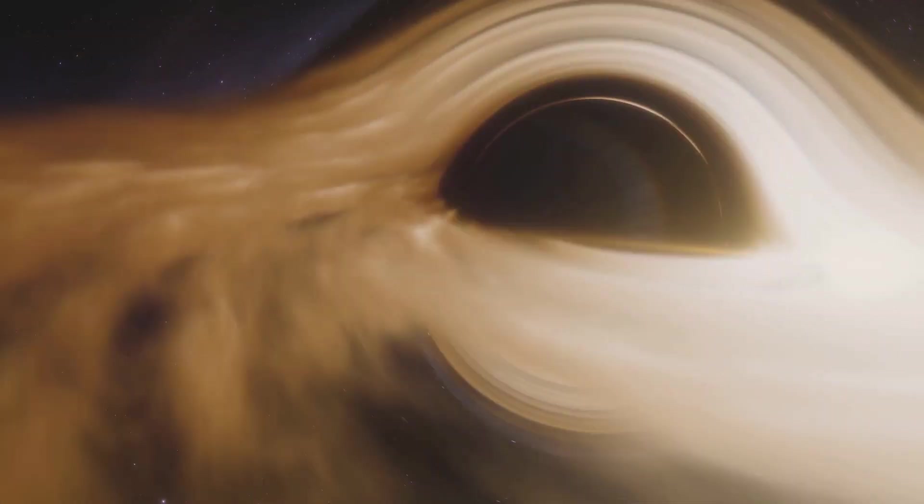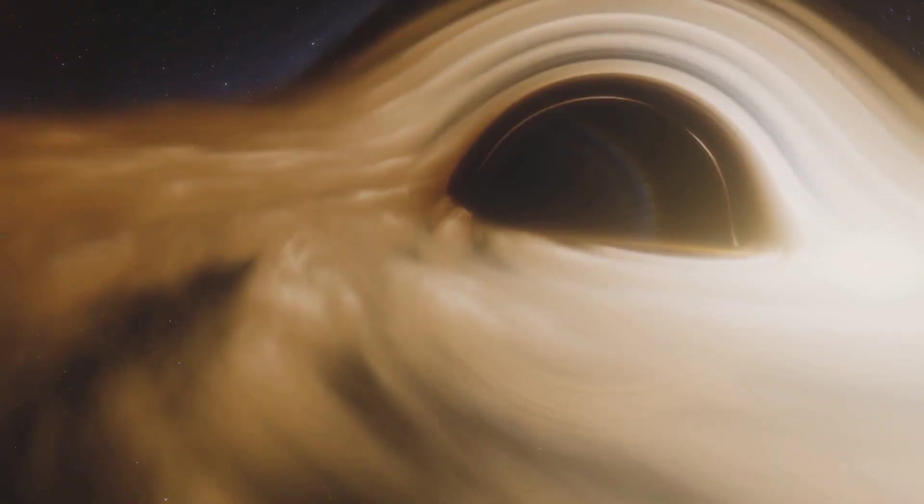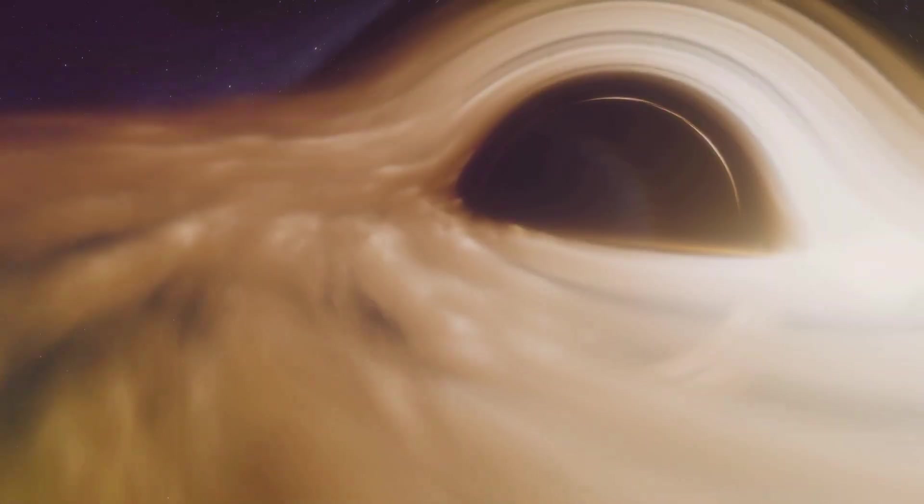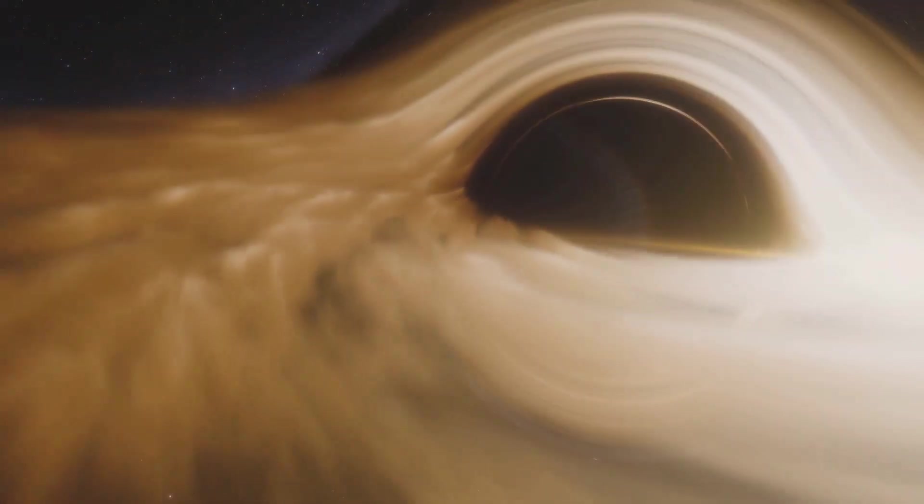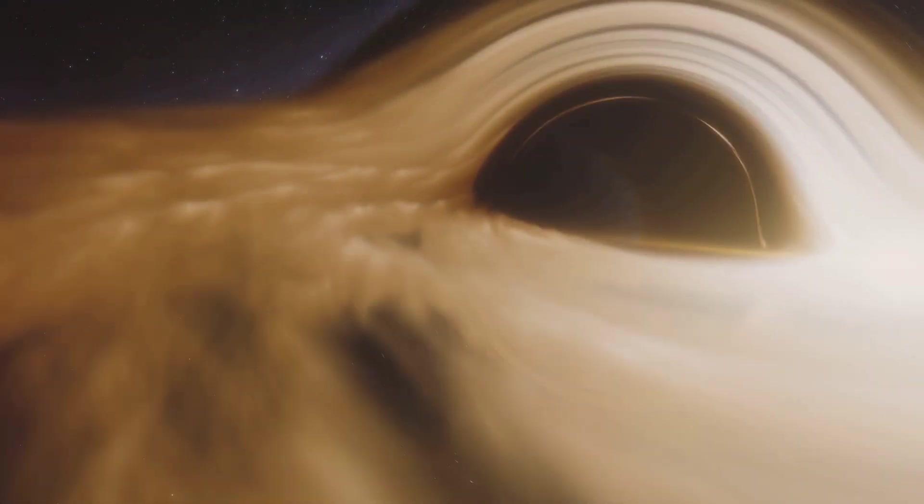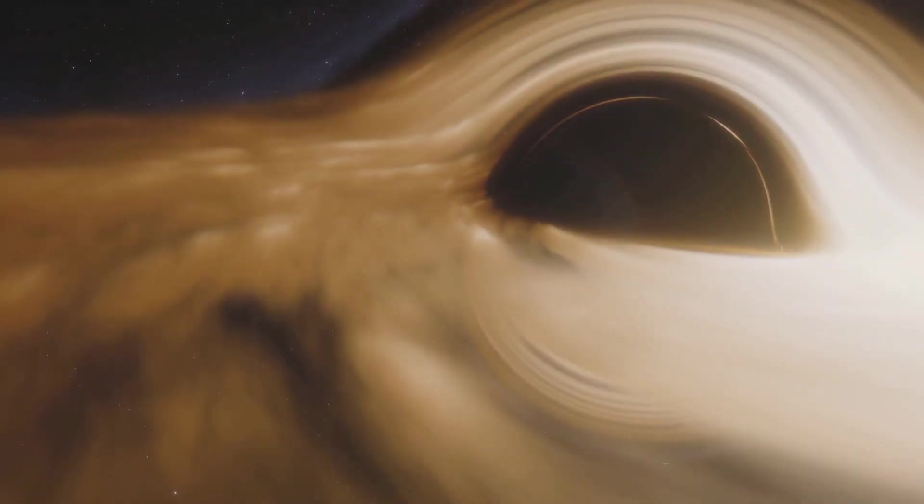Circling around the black hole is the accretion disk. This is a flat, rotating disk of dust, gas, stars and other cosmic matter that the black hole has managed to pull in but has not yet crossed the event horizon.